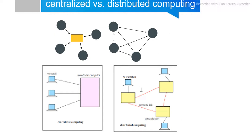In the given picture, you can see that in centralized computing, all jobs are submitted to one single point where processing is done. Individual systems submit their results to one central system only, so everything is managed in a centralized manner.